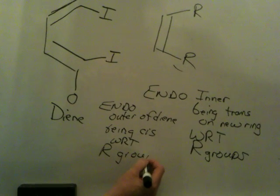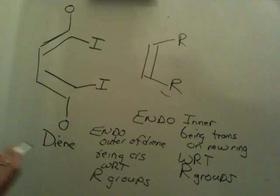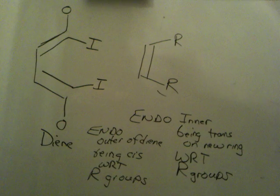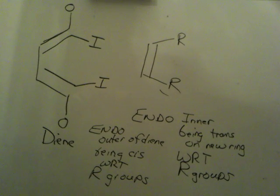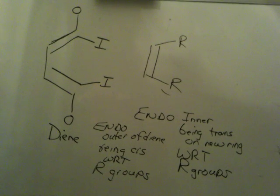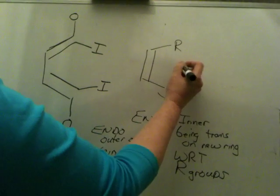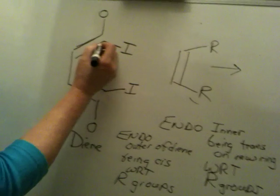Being cis with respect to the R groups. And I'm just calling the R groups, I'm just calling the groups on the dienophile the R groups. So if you were doing this reaction and you wanted to draw the endo, and the endo is favored because of pi stacking interactions, if you wanted to draw it...